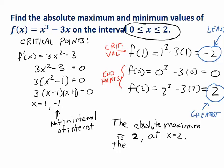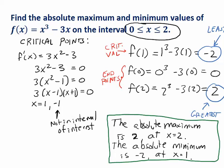Similarly, the absolute minimum was negative 2, at x equals 1. So this is the answer to this question. The absolute maximum is 2, occurring at the input value of 2, and the absolute minimum is negative 2, occurring at the input of 1.